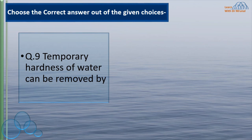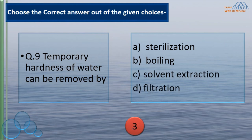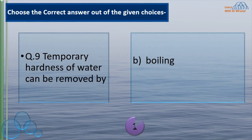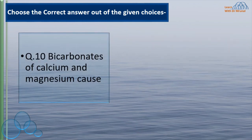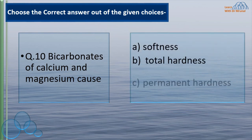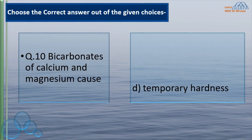Temporary hardness of water can be removed by: sterilization, boiling, solvent extraction, filtration. We know that temporary hardness can be removed by boiling. Bicarbonates of calcium and magnesium cause: softness, total hardness, permanent hardness, or temporary hardness. Bicarbonates are responsible for temporary hardness, and that is why temporary hardness is also called carbonate hardness. So the correct answer is D.